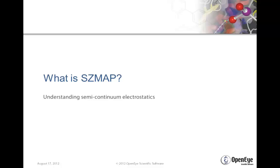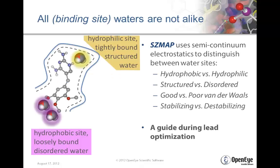SHMAP is a tool that helps modelers and medicinal chemists understand the role of water in molecular interactions like ligand binding. It provides users with insight on critical features of a binding site. It predicts where and how neighboring waters can influence the binding of a ligand, and it can generate ligand modification hypotheses designed to better exploit specific regions of solvent in a binding site. SHMAP does this using semi-continuum electrostatics theory.